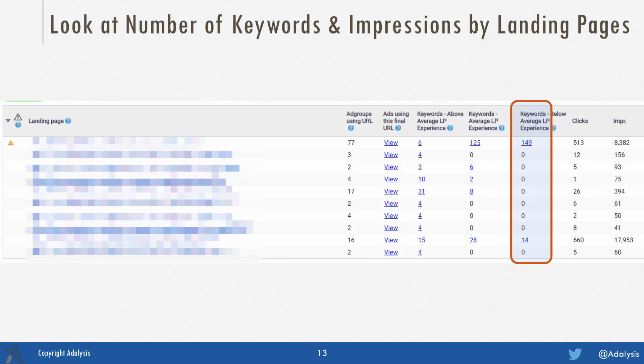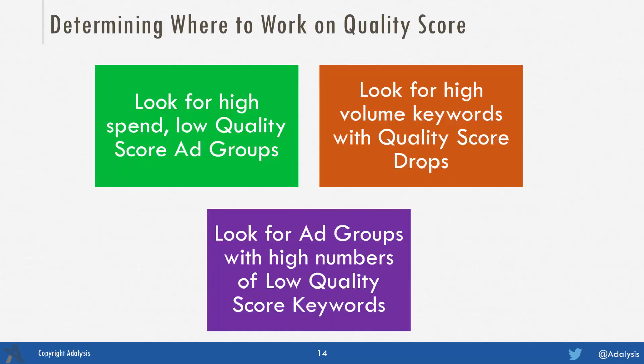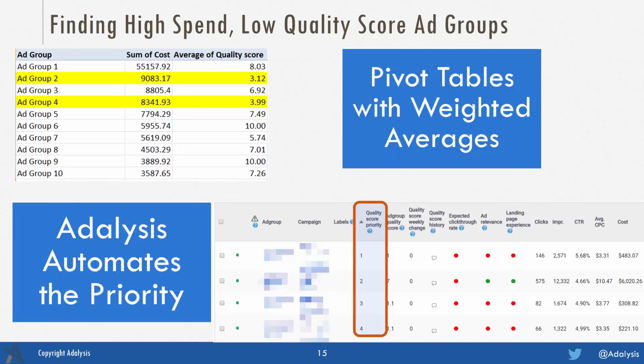If we saw every single page had poor keywords, we'd want to make sure we look at things like speed as well. When thinking about where to work on quality score, number one is to look for high spend, low quality score ad groups. Two, look for high volume keywords where your quality score has dropped. And number three, look for ad groups with high numbers of low quality score keywords.